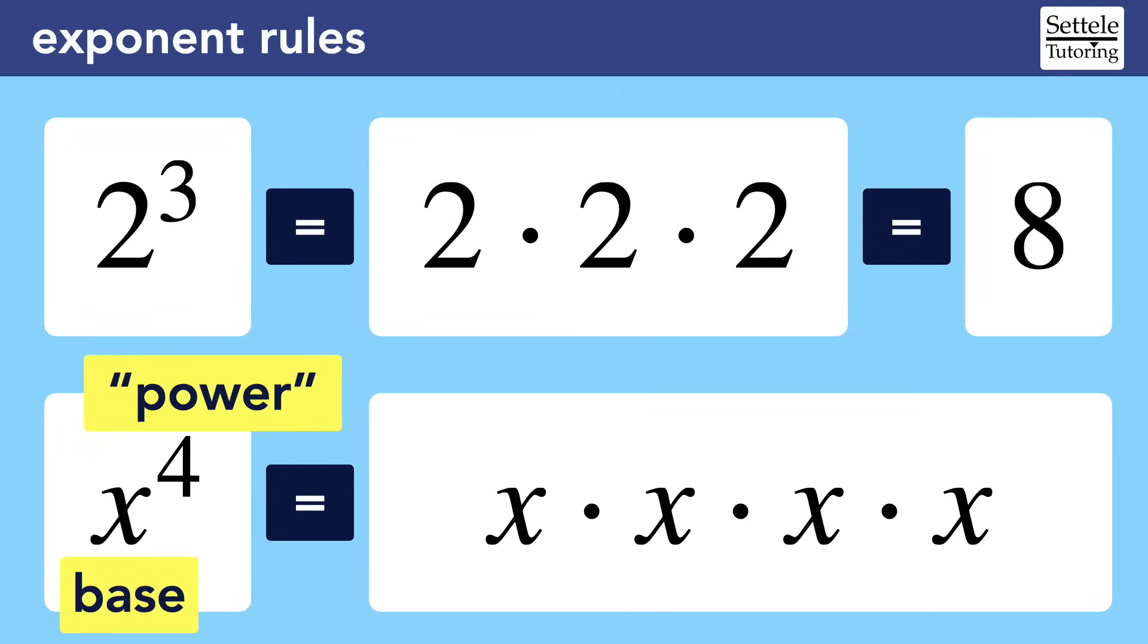We also sometimes call exponents powers, so this page shows 2 to the 3rd power and x to the 4th power. We can also say that 2 to the 3rd is 2 cubed. When the exponent is 2, we sometimes say that the base is squared.